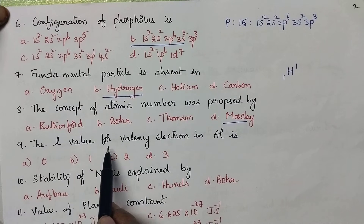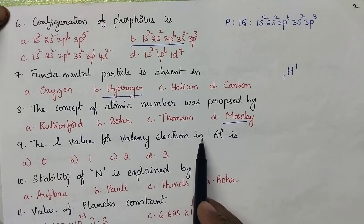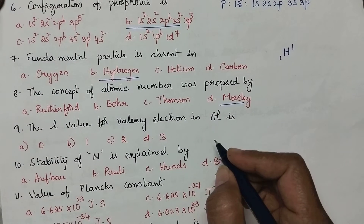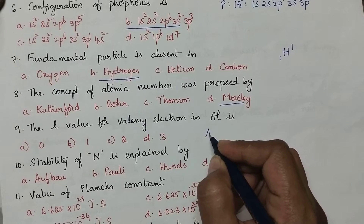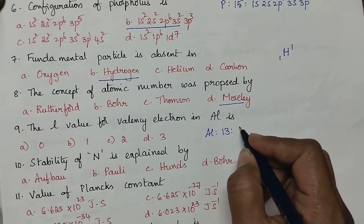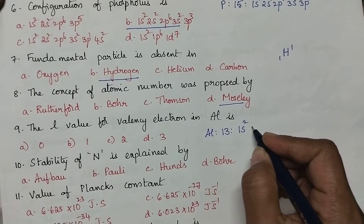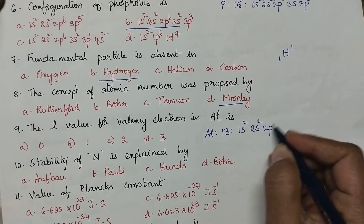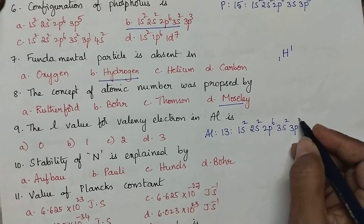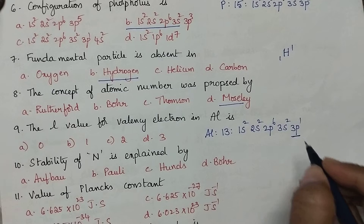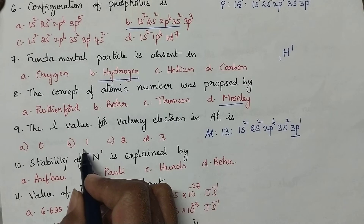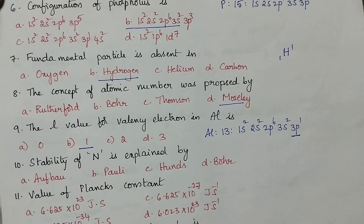The l value for valency electron in aluminum: we have to write the electronic configuration of aluminum. Atomic number of aluminum is 13. Hence, its configuration is 1s2, 2s2, 2p6, 3s2 and 3p1. So, the outermost electron is present in the p orbital. The l value for the p orbital is 1. So, option B is the right answer.